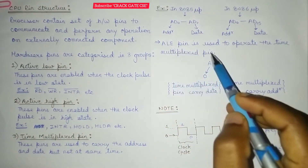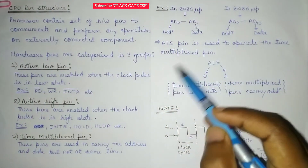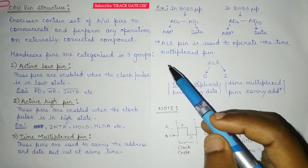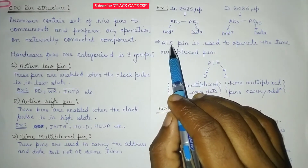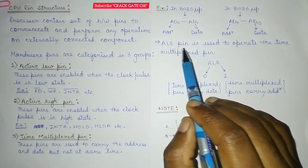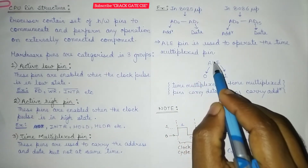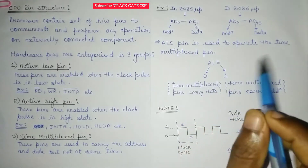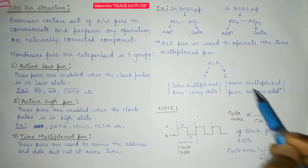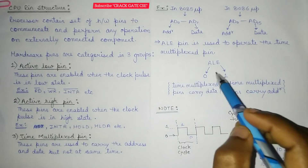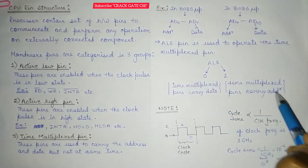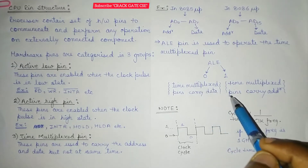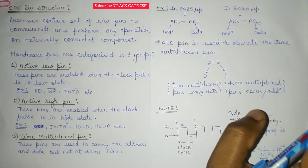The ALE pins are used to operate the time multiplexed pins. Whenever we have a time multiplexed pin carrying address as well as data, we have to use the ALE pin. ALE stands for address latch enable. When the value of ALE is zero, the time multiplexed pins carry the data. When the value of ALE is one, the time multiplexed pins carry the address. Do not get confused with it.